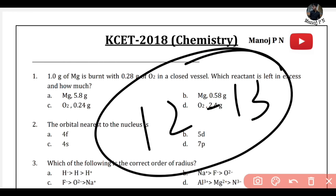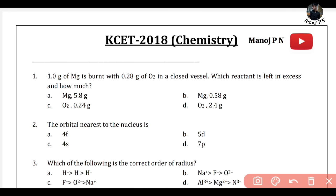Subscribe and see the link in the description. If you have any questions you can raise them there. Okay, so the first question is: 1 gram of Mg is burnt with 0.28 grams of O2 in a closed vessel. Which reactant is left in excess and how much?